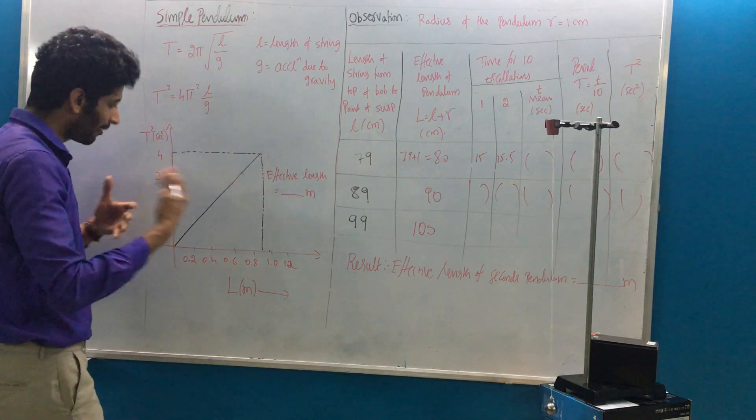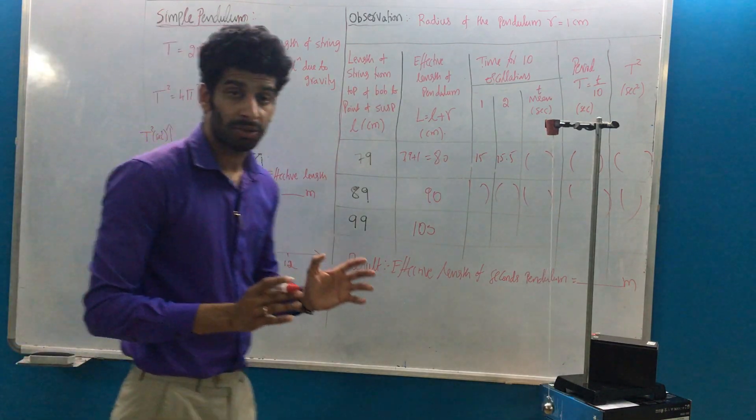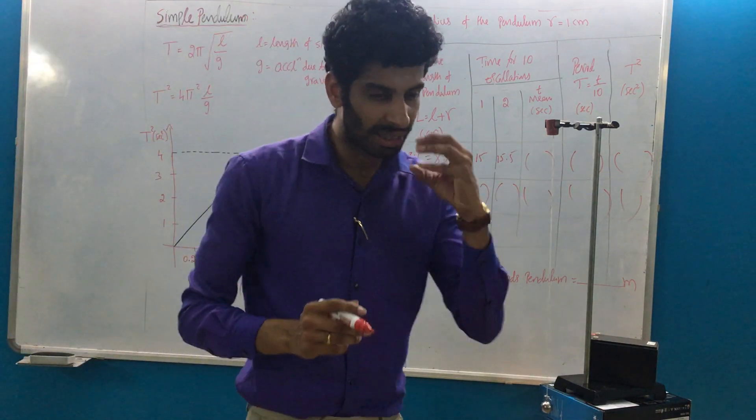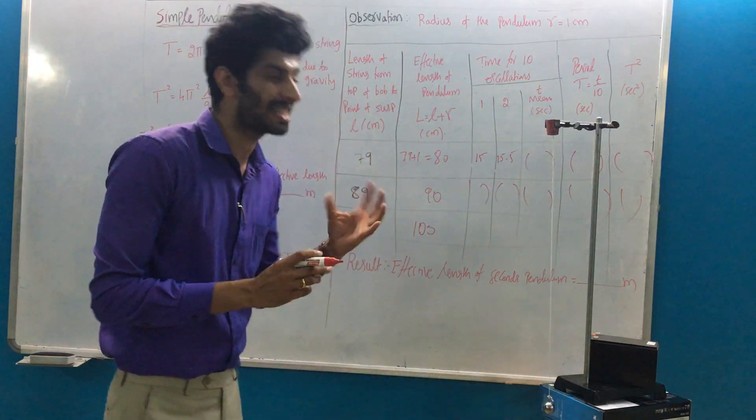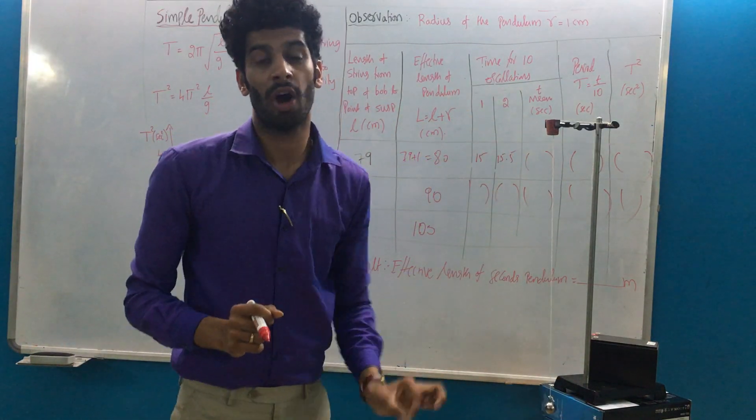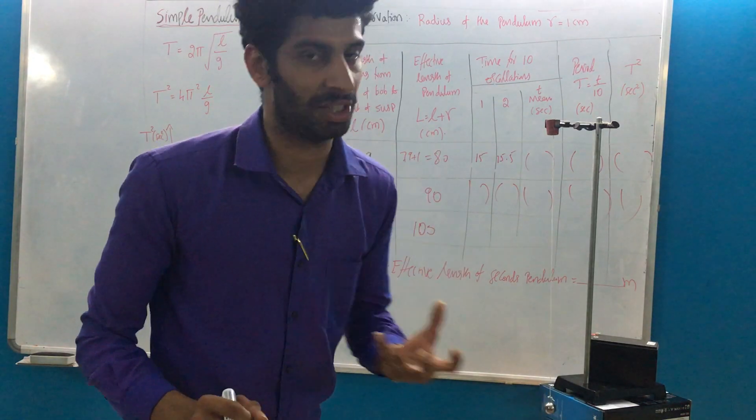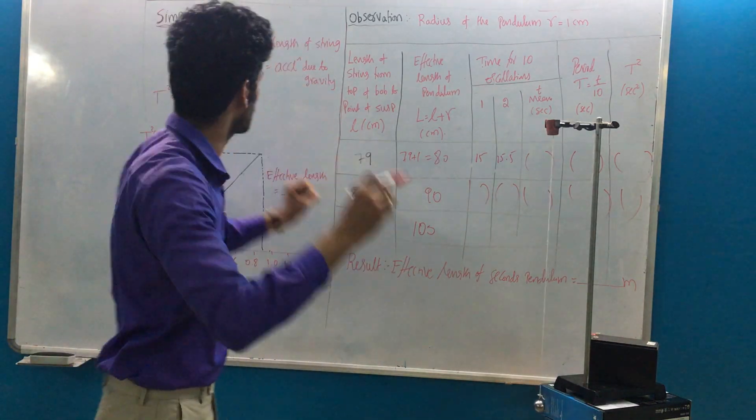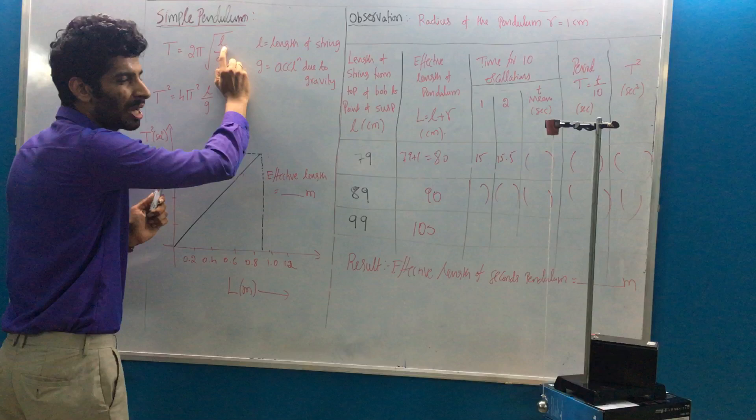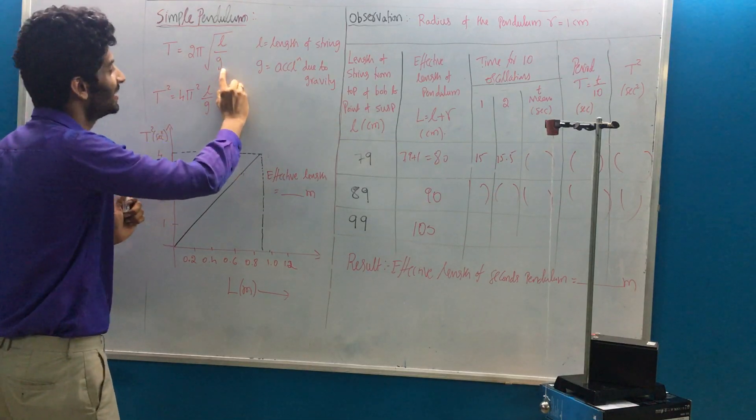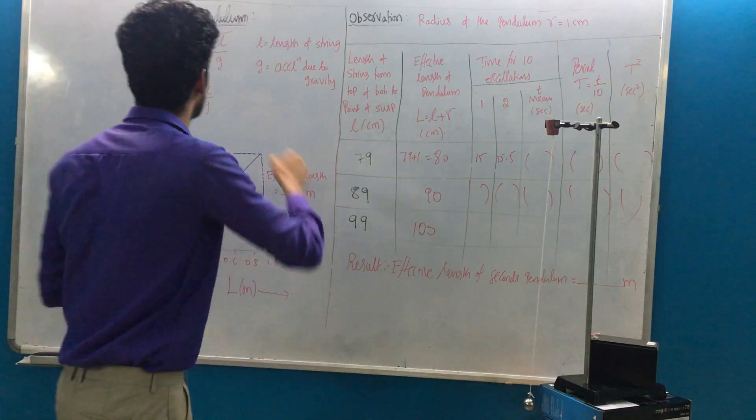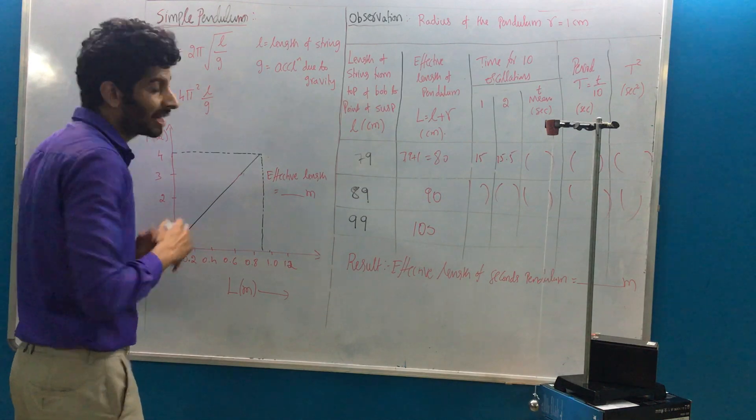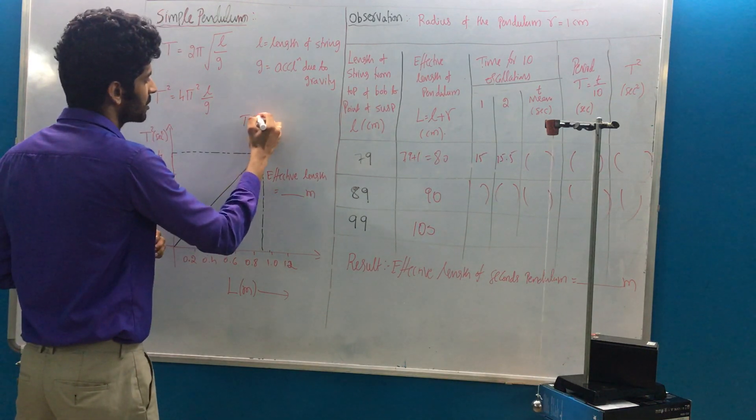After that, you need to find out what is the effective length of the seconds pendulum. The seconds pendulum is designed in such a way that for one meter length of the string, you would get the time period as two seconds, irrespective of mass. If you substitute l = 1 meter and g = 9.8 m/s², you will get T equal to exactly 2 seconds. So effective length of the seconds pendulum is calculated for T = 2 seconds.